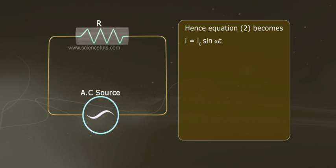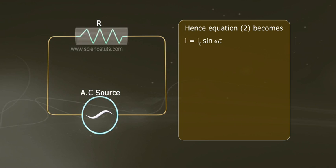Hence, equation 2 becomes I equals to I₀ sin ωt.